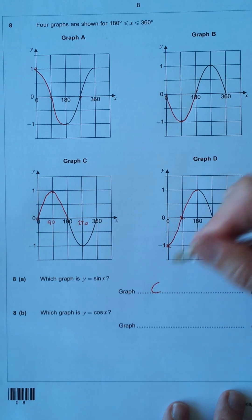So, that one is C. Similarly, cosine graph. Very straightforward. You should know this one.